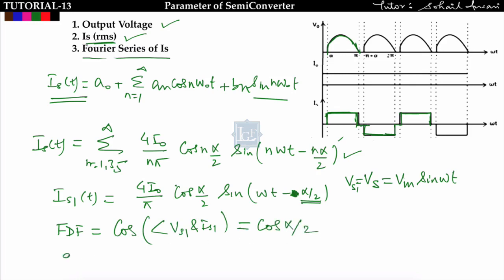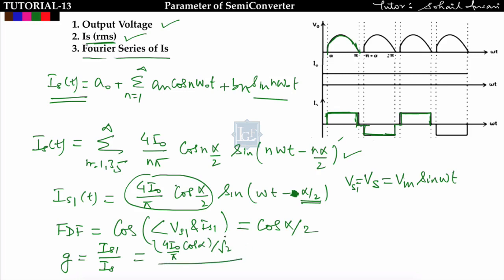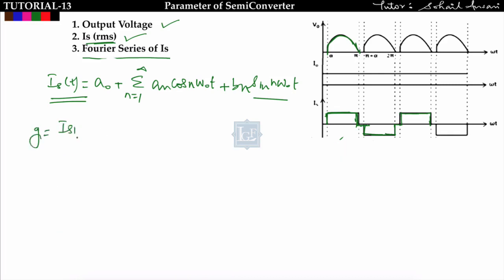The distortion factor = IS1_rms / IS_rms. The maximum value of is1 is (4I0/π)·cos(α/2), so IS1_rms = (4I0/π)·cos(α/2) / √2. IS_rms was already derived as I0·√[(π − α)/π]. The distortion factor G is therefore IS1_rms divided by IS_rms.